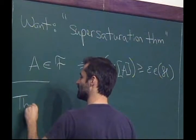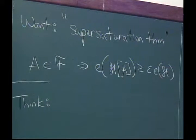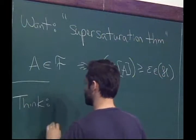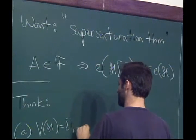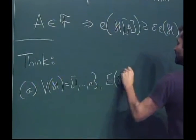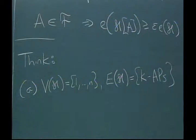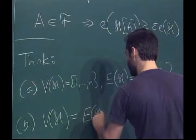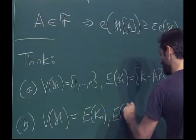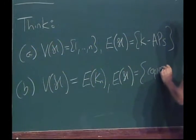We should think of applying this not just to an arbitrary hypergraph H but to a big family of hypergraphs. The applications we're thinking about are: either the vertex set of H is {1, ..., N} and the edge set of H is the set of K-term arithmetic progressions — so every arithmetic progression of length K is an edge of size K in your K-uniform hypergraph — or the vertex set of H is the edge set of the complete graph on N vertices and the edge set of H is copies of some graph H.